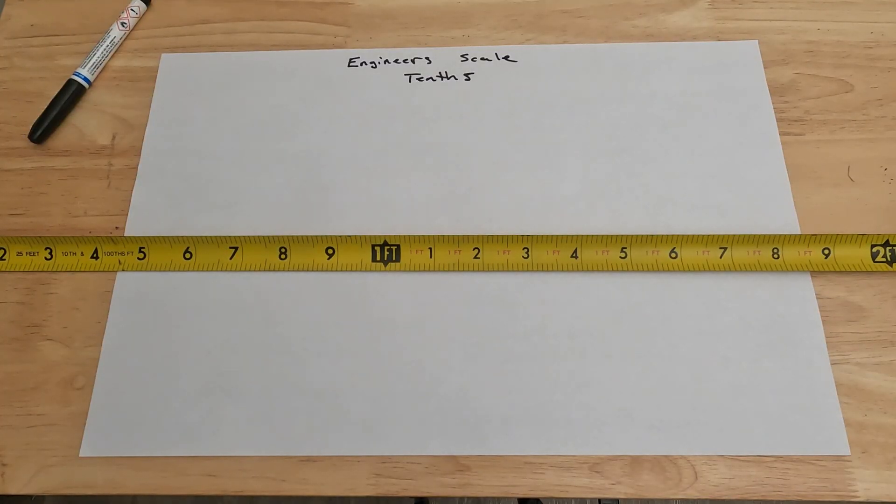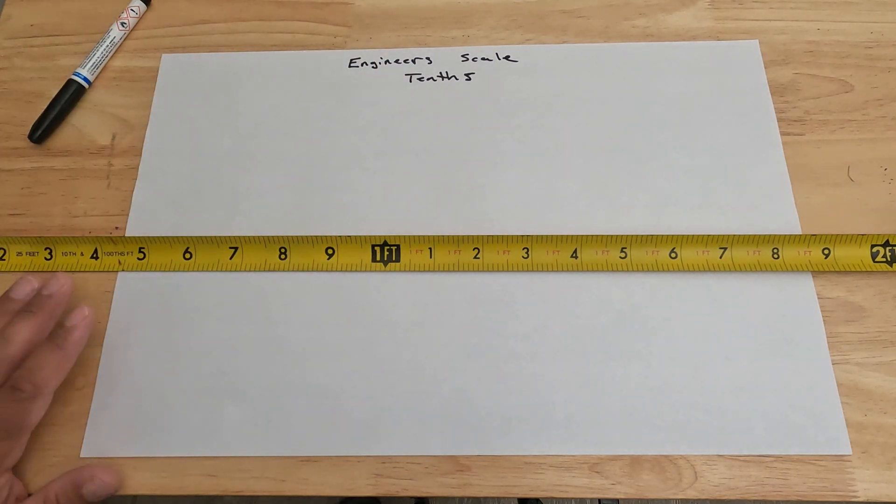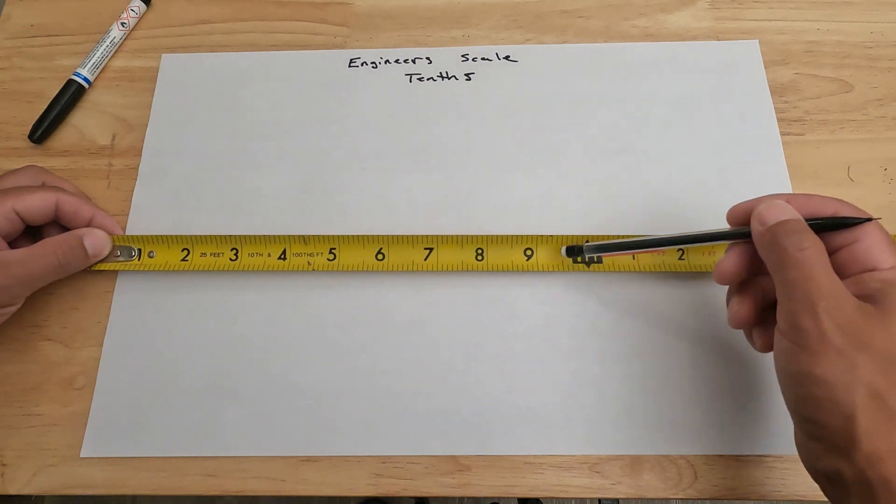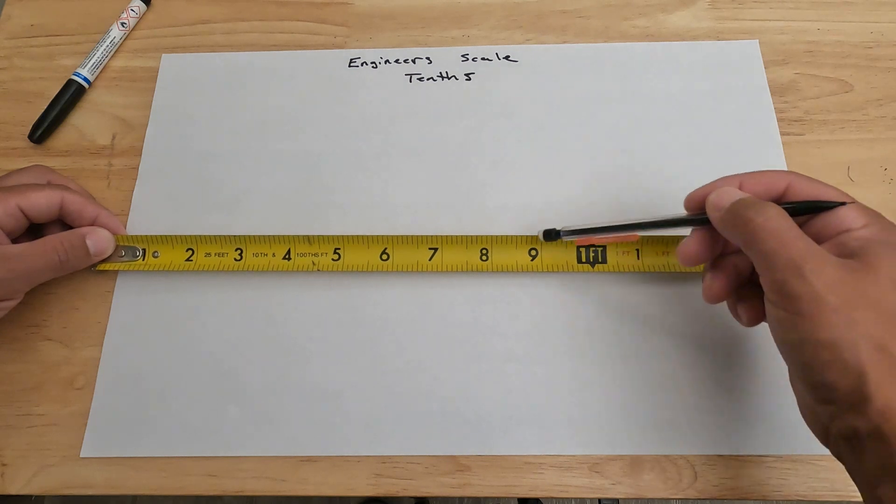Hey, what's up guys, Matt here with Fix Anything Save Money. Today we're going to be showing you how to read a tape measure in engineer scale or tenths. This differs from inches in that it takes a foot and breaks it up into 10 pieces, whereas with inches it takes a foot and breaks it up into 12 pieces.